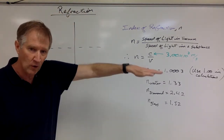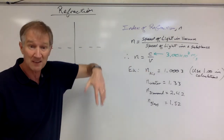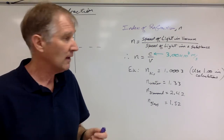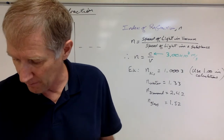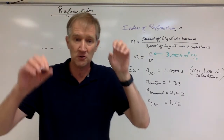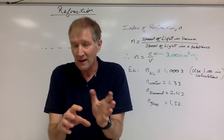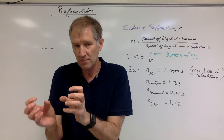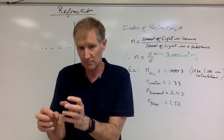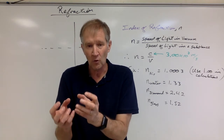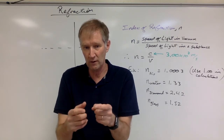If light hits a boundary straight on it keeps going in a straight line, but if it hits at an angle it's going to bend — it'll deviate from its original path. Pause this video now and go watch the refraction demo that's linked on the page, then come back and pick up right here.